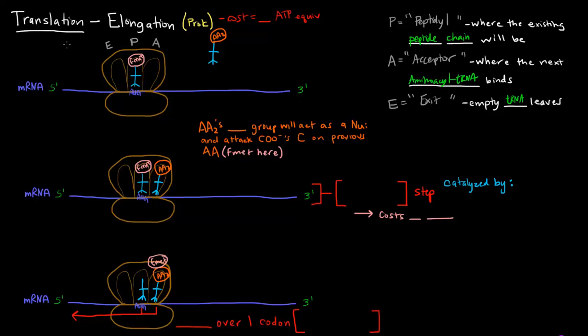How does elongation happen? This is the formyl-methionine, the first amino acid in prokaryotes, which has a free amino terminus. The next aminoacyl tRNA comes in and binds in the A site.